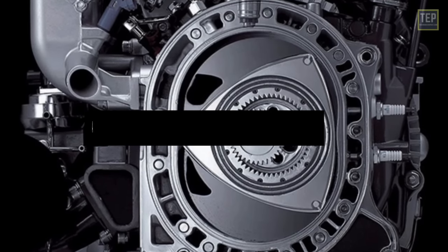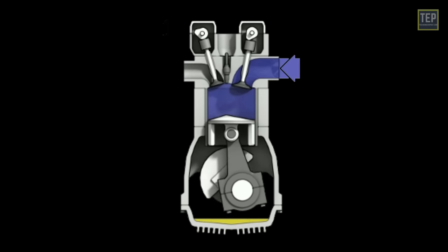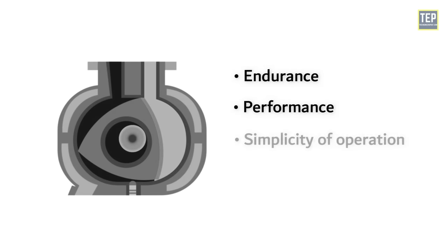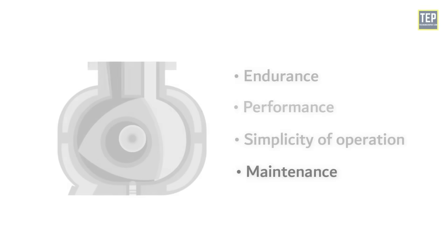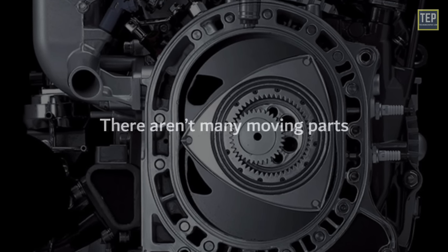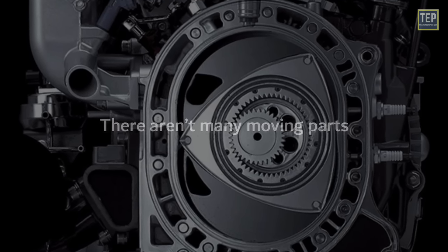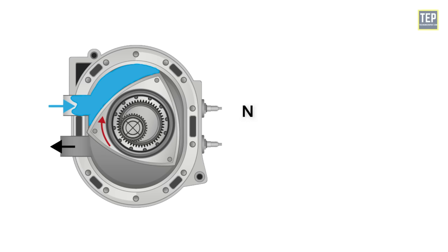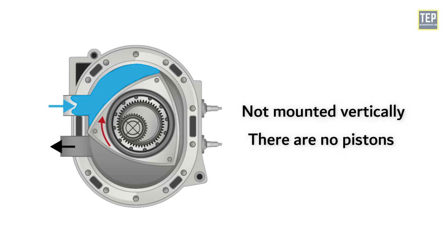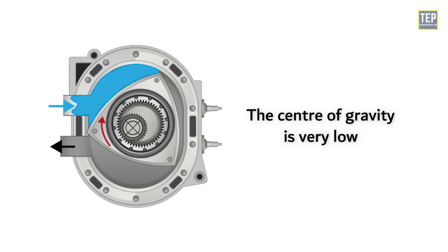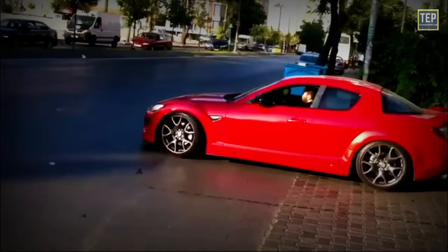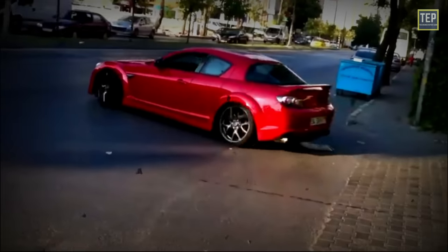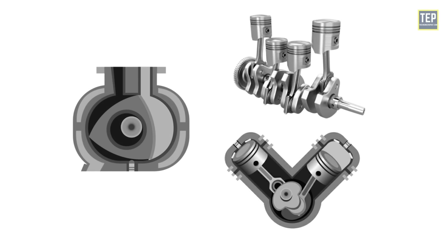Rotaries typically outperform piston reciprocating engines in endurance, performance, and simplicity of operation and maintenance. There aren't many moving parts. The Wankel design is extremely smooth, compact, and lightweight. Since it is not mounted vertically and there are no pistons, the center of gravity is very low, therefore the handling and ride of the car are very planted. They are way more compact than inline or V-type arrangements.